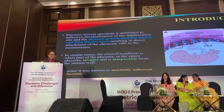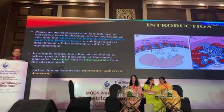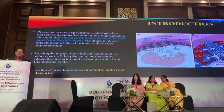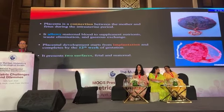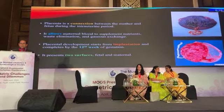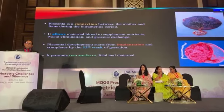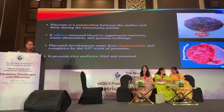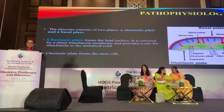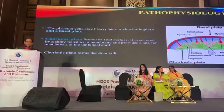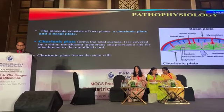We have an absence of the decidua basalis layer and then penetration of the placenta into the myometrium, and in worse cases it goes to the serosa. Placenta has a connection with a basal plate and a chorionic plate, and it starts developing from implantation and can go up to twelve weeks period of gestation. It has a fetal and a maternal surface, with a chorionic plate as the fetal surface — a translucent membrane.